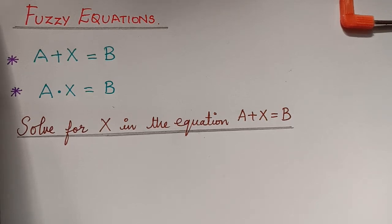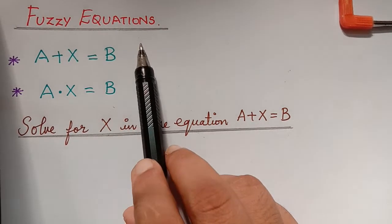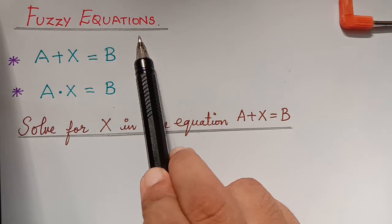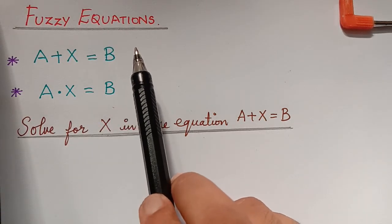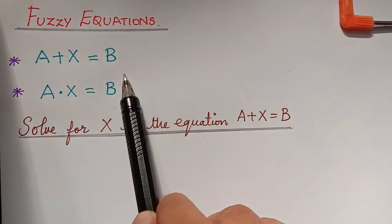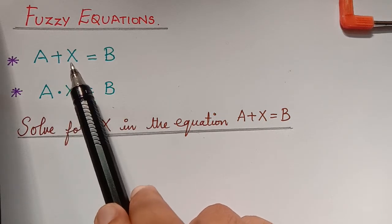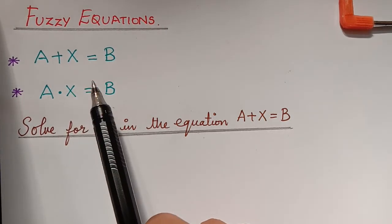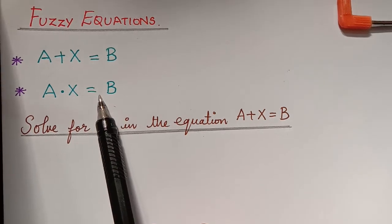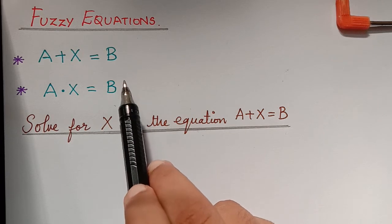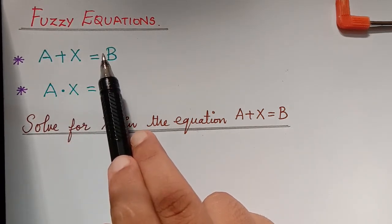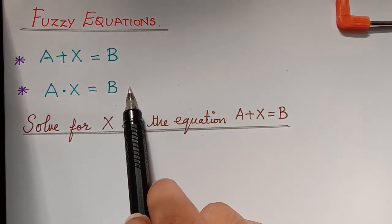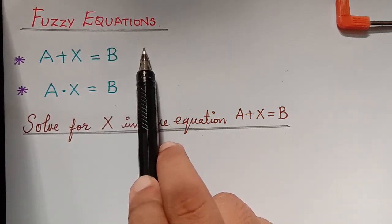Hello students. The next topic under the unit fuzzy numbers is fuzzy equations. These equations play a major role in fuzzy set theory, in which fuzzy numbers and the arithmetic operations on fuzzy numbers play a fundamental role. In these equations, the coefficients and the unknowns are fuzzy numbers, and the formulas are constructed by operations of fuzzy arithmetic. Fuzzy equations have greater applications, which we will see later.